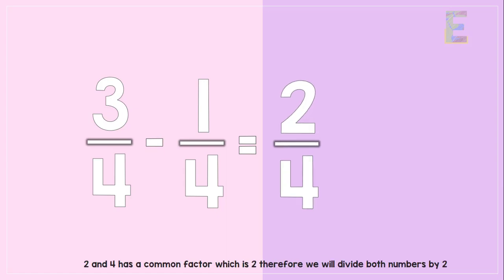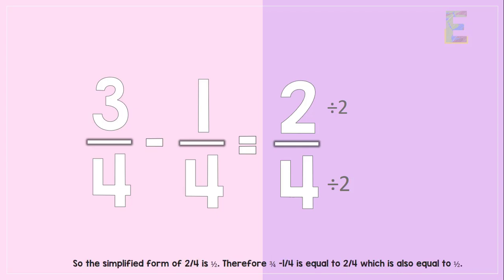2 and 4 have a common factor which is 2, therefore we will divide both numbers by 2. The simplified form of 2 over 4 is 1 over 2, or one half. Therefore 3 over 4 minus 1 over 4 is equal to 2 over 4, which is also equal to 1 half.